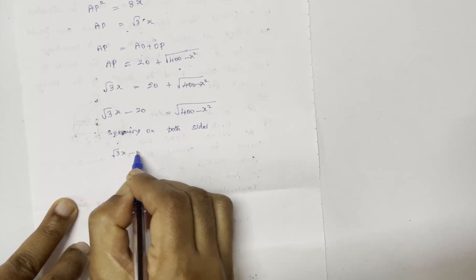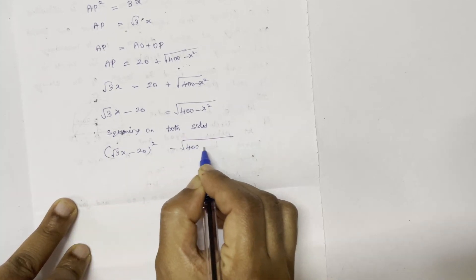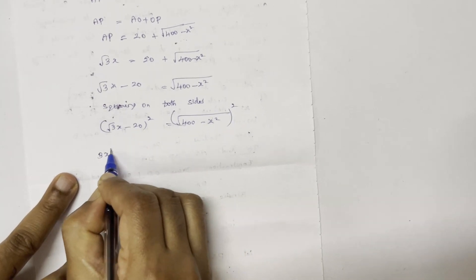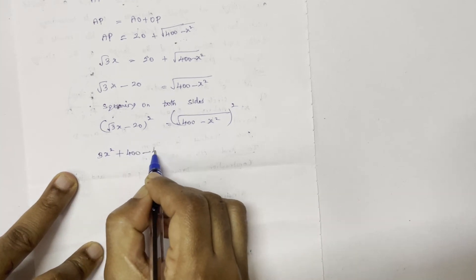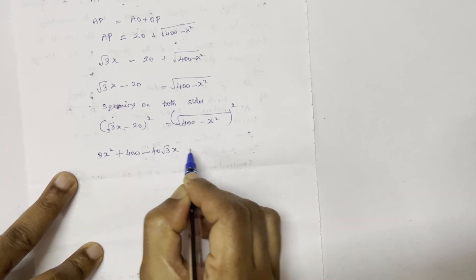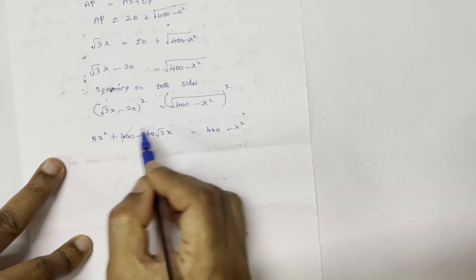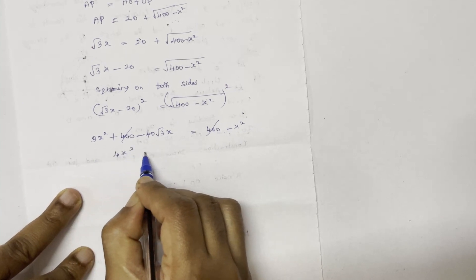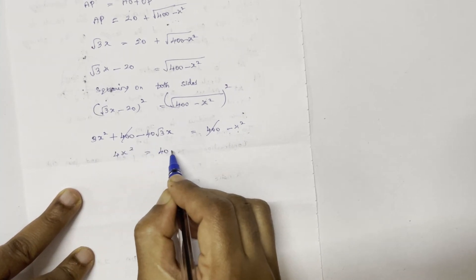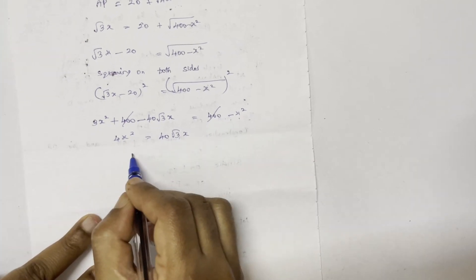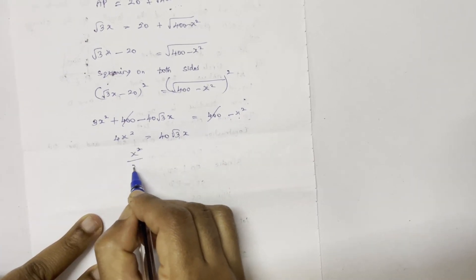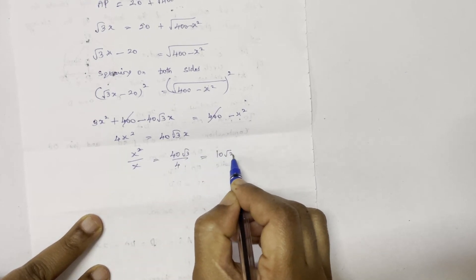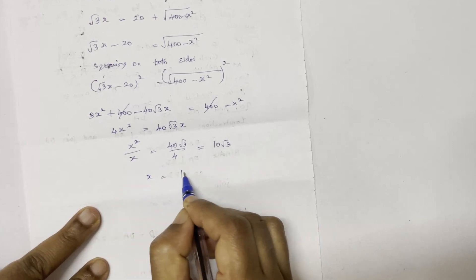For root 3x minus 20, the whole squared equals 400 minus x squared. Expanding using the a minus b whole squared formula: 3x squared plus 400 minus 40 root 3x equals 400 minus x squared. The 400s on both sides cancel out, giving 4x squared. So x equals 40 root 3 divided by 4, which equals 10 root 3.